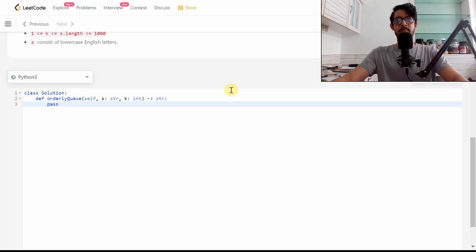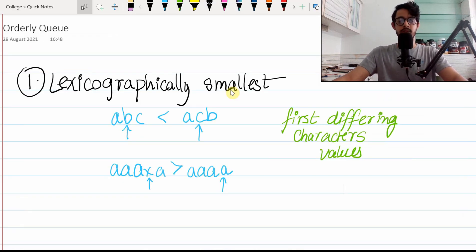But to get to that point, we first need to build up our intuitions. Step one: what is meant by lexicographically smaller string that we have to return? Let's take a couple of examples.